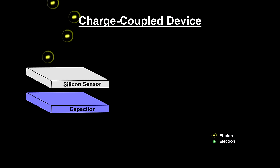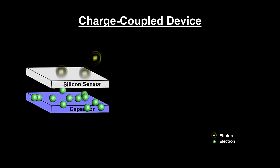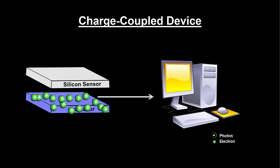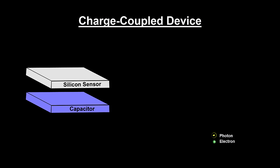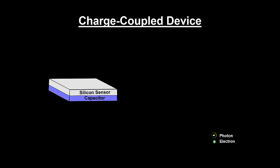The photons start producing electrons as soon as the shutter is opened. The capacitor collects the freed electrons until the shutter is closed. At that point, the voltage across the capacitor represents the number of electrons collected. This information is sent to the computer. All of this is miniaturized into an integrated circuit and represents one pixel.